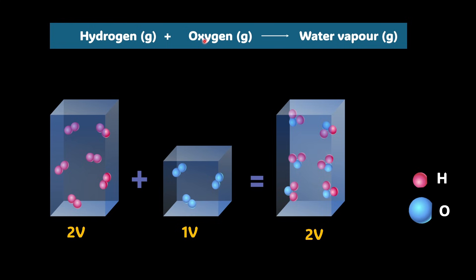According to Avogadro, two volumes of hydrogen gas contain two N molecules. Similarly, one volume of oxygen contains N molecules of oxygen. They combine to form two volumes of water vapour, which contain two N molecules of water vapour. This explains how we get 2 is to 1 is to 2 volume ratio corresponding to the molecular ratio, because V is directly proportional to N according to Avogadro's law.